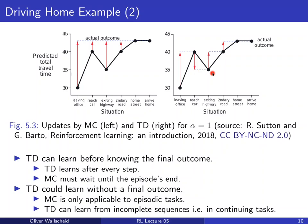A key feature of temporal difference learning is that it can be applied to continuing tasks, such as engineering control tasks where there are no specific episodes to wait for. When control must run 24/7, TD's step-by-step update procedure is well suited, whereas Monte Carlo cannot handle these types of reinforcement learning problems.